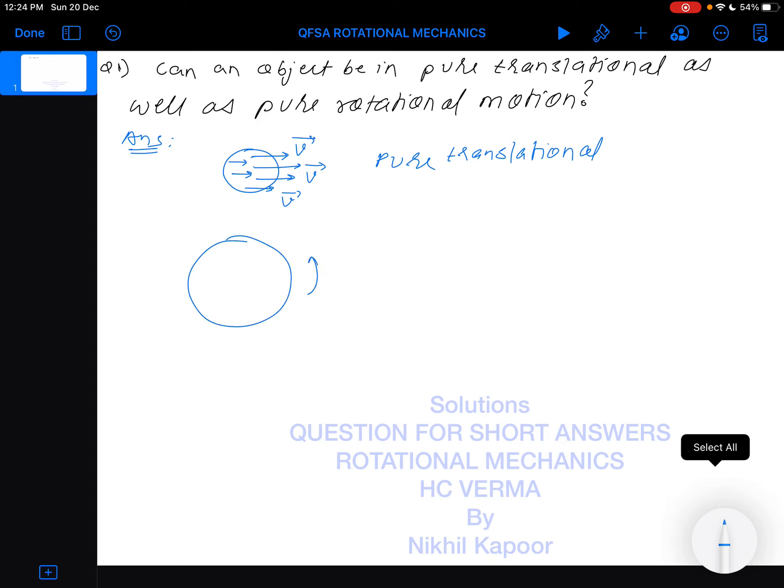When an object is in pure rotational motion, then every particle about a common axis is moving in a circle with the same angular velocity. This particular motion is said to be pure rotational motion.